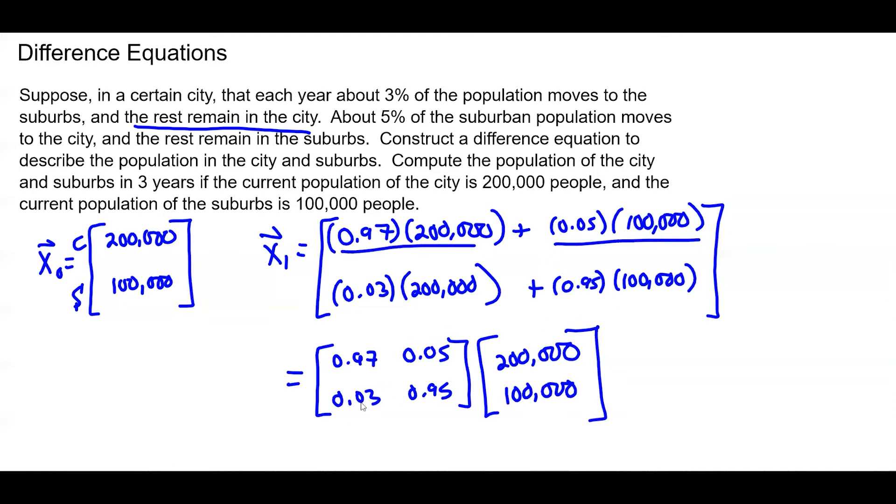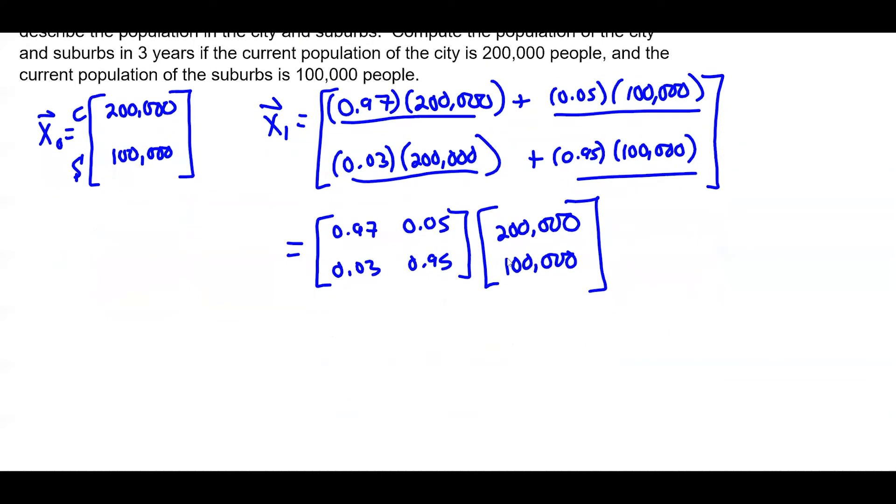The second row, 3% times 200,000, 95% times 100,000. That's what I wrote here. So this is our formula for how to find this next vector. And this is this matrix times the X0 vector.